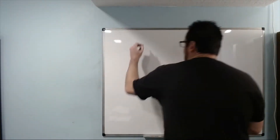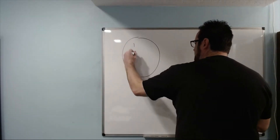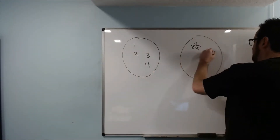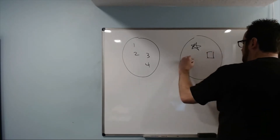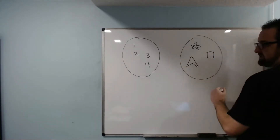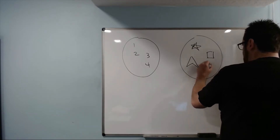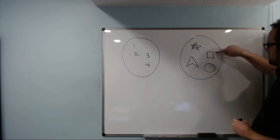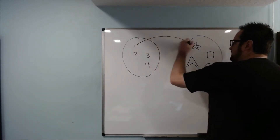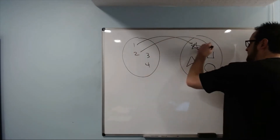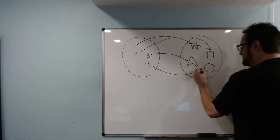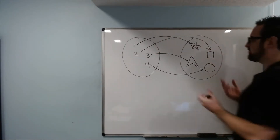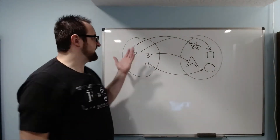If you have two sets and you want to count them, if the sets are small, it's not too bad. For example, if I have a set with one, two, three, and four, and another set with a star, a square, a Star Trek symbol, and a circle — I can count these by going one, two, three, four. But what that really is, is an arrow assignment from each of these numbers associated with each of these shapes. You can see all these assignments, and that works really nicely.